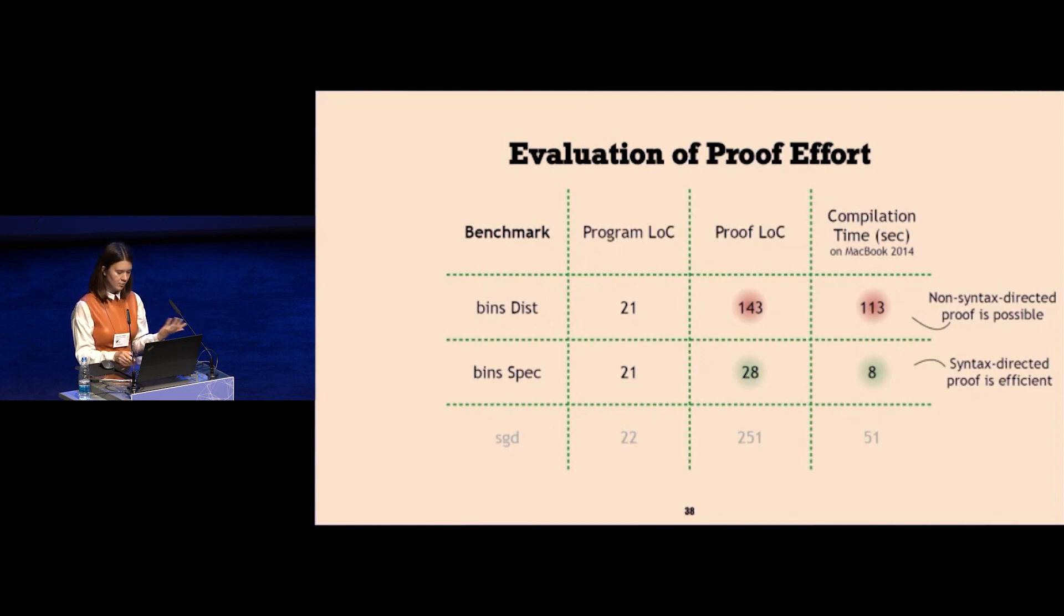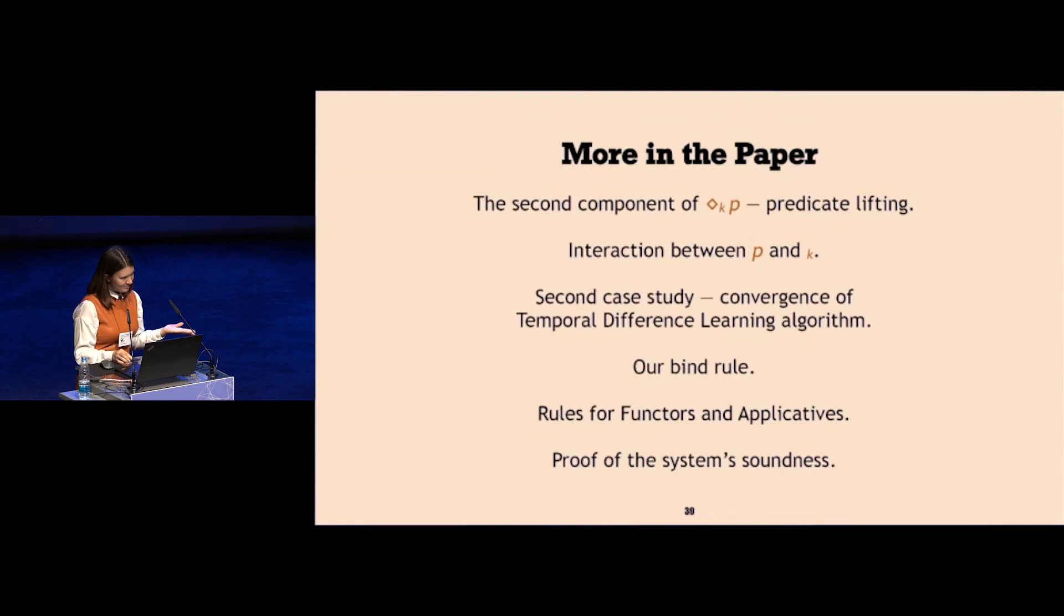In sgd we have a mix of both, so the proof is supposedly shorter, compiles faster than you would have without our relational system. In the paper, I don't have time to cover now, but it's interesting how our p and k components of the connective relate to each other, and how we use this interaction between them to prove our different case study, the convergence of a certain reinforcement learning algorithm.